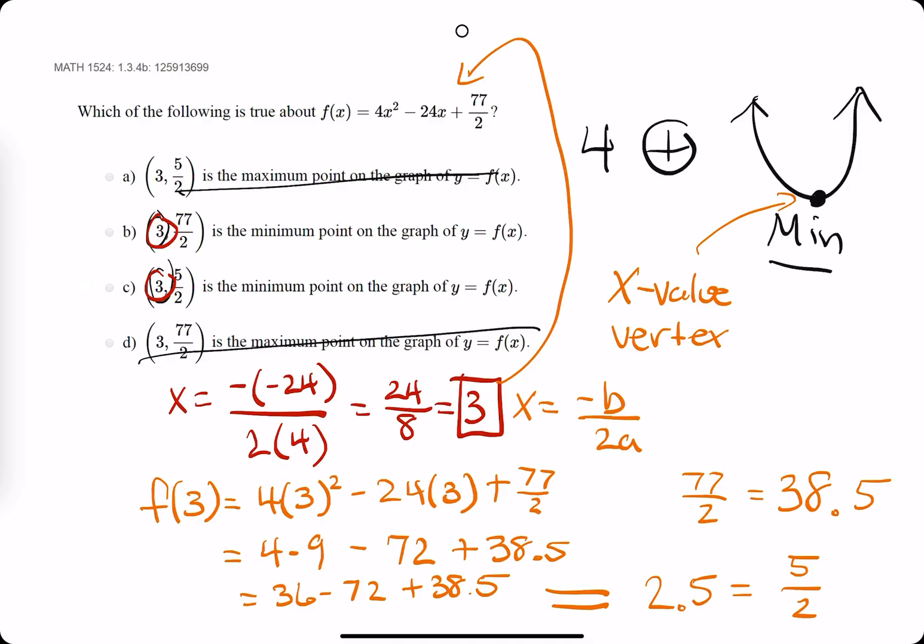So, that tells us that our answer is C because the y value of the vertex or of the minimum is 5 halves. So, bring out our eraser, we find out that C is the correct answer.